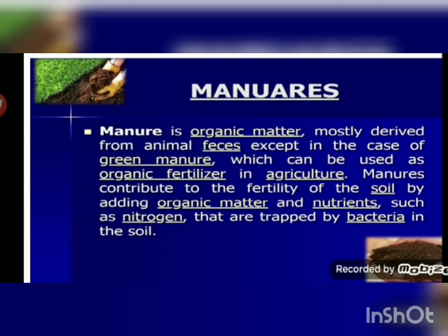Manure is organic matter so it does not contain any harmful chemicals; it is obtained from natural things such as plants and animal waste. It can be made on the farm itself and does not require much expense. To make manure, pits are dug in the farm and all plant and animal waste is put in them and covered from the top. Because of the heat of the sun and moisture from the soil, this waste decomposes and is converted into organic manure.